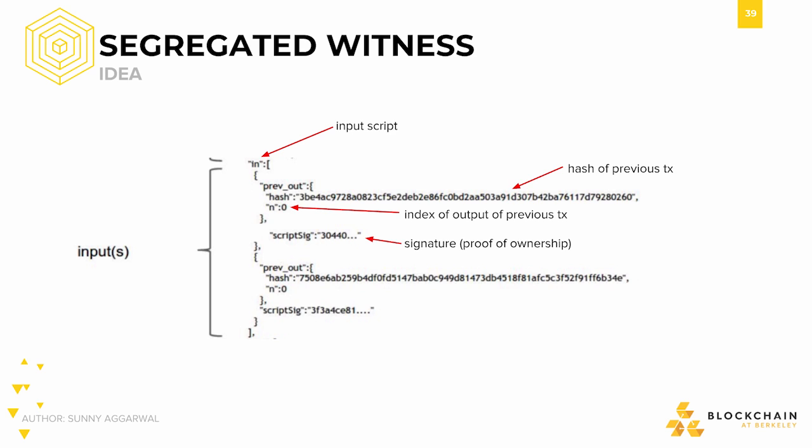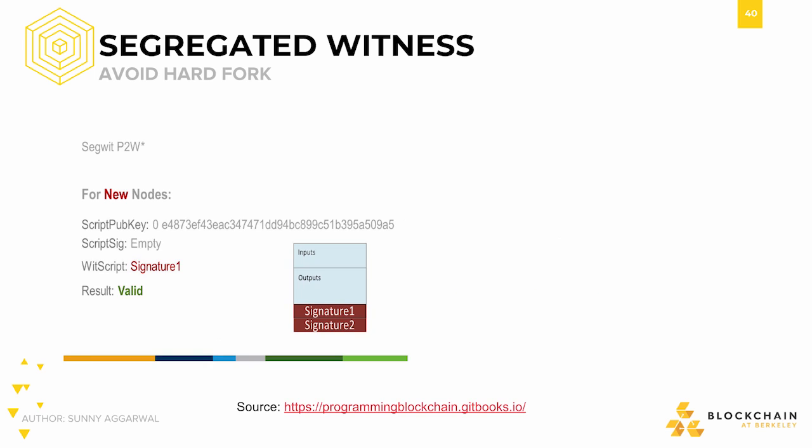From previous sections, we saw that the transaction size is on average about 546 bytes, so if we could decrease that size, that would be great. The idea for SegWit was to move the signatures to a separate add-on structure outside of the script pub key, to what's called a segregated witness.